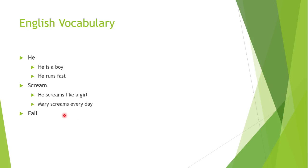Terceira palavra: fall — cair. Don't fall — não caia. Como é que eu digo 'ele cai todo dia'? Você já aprendeu 'ele,' já aprendeu 'cair,' e já aprendeu 'todos os dias.' Então a frase seria: He falls every day. Very good!